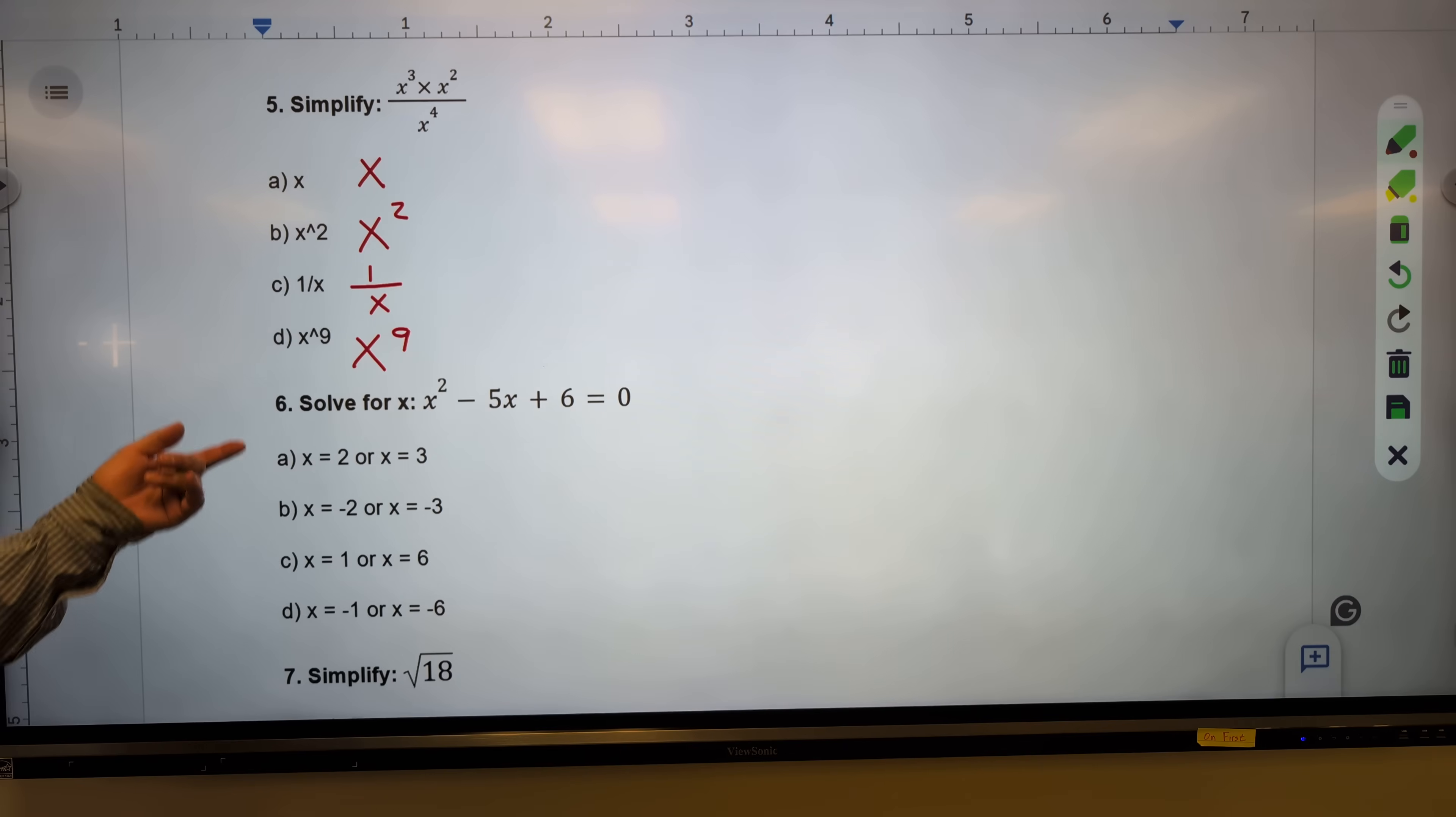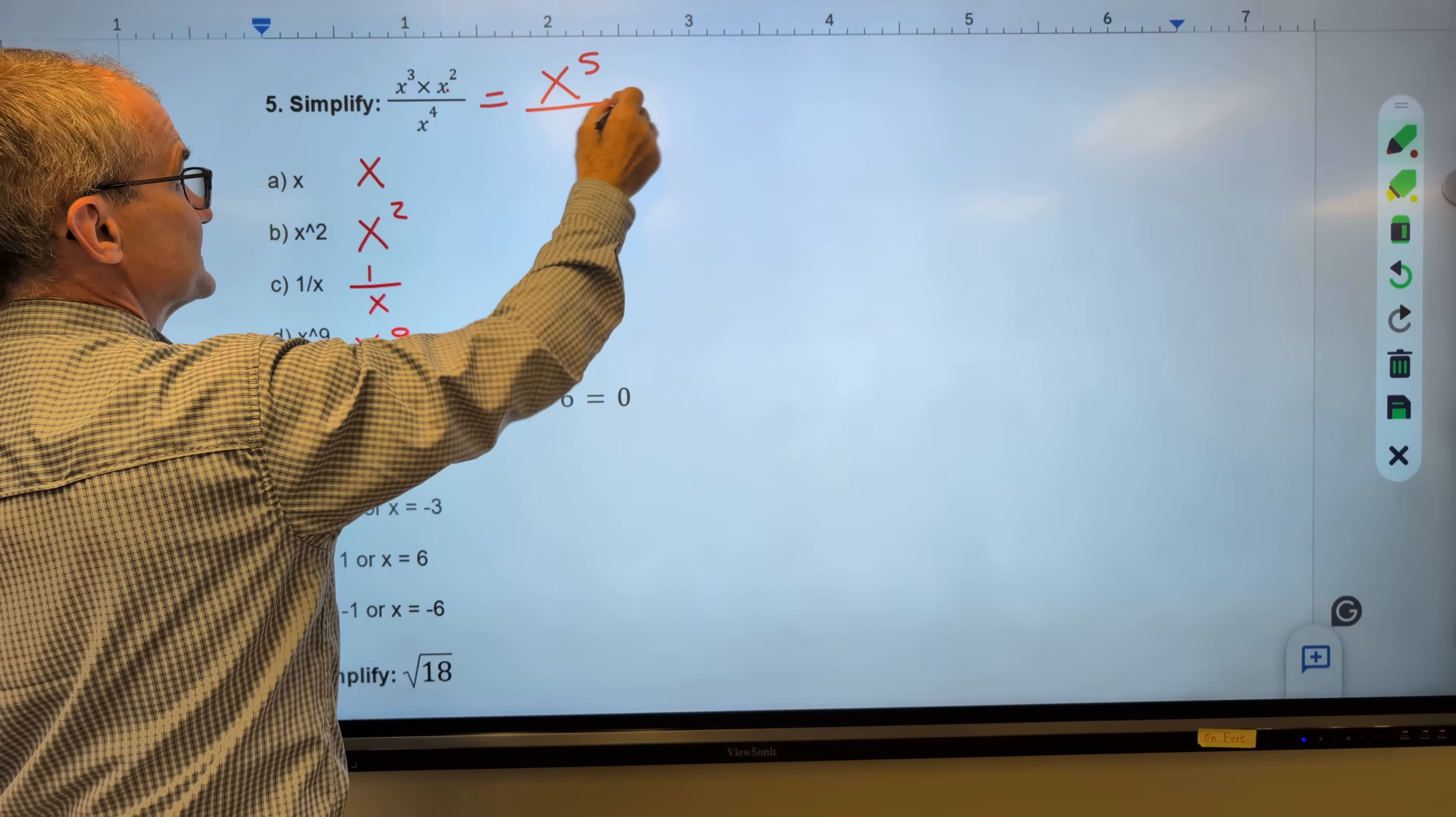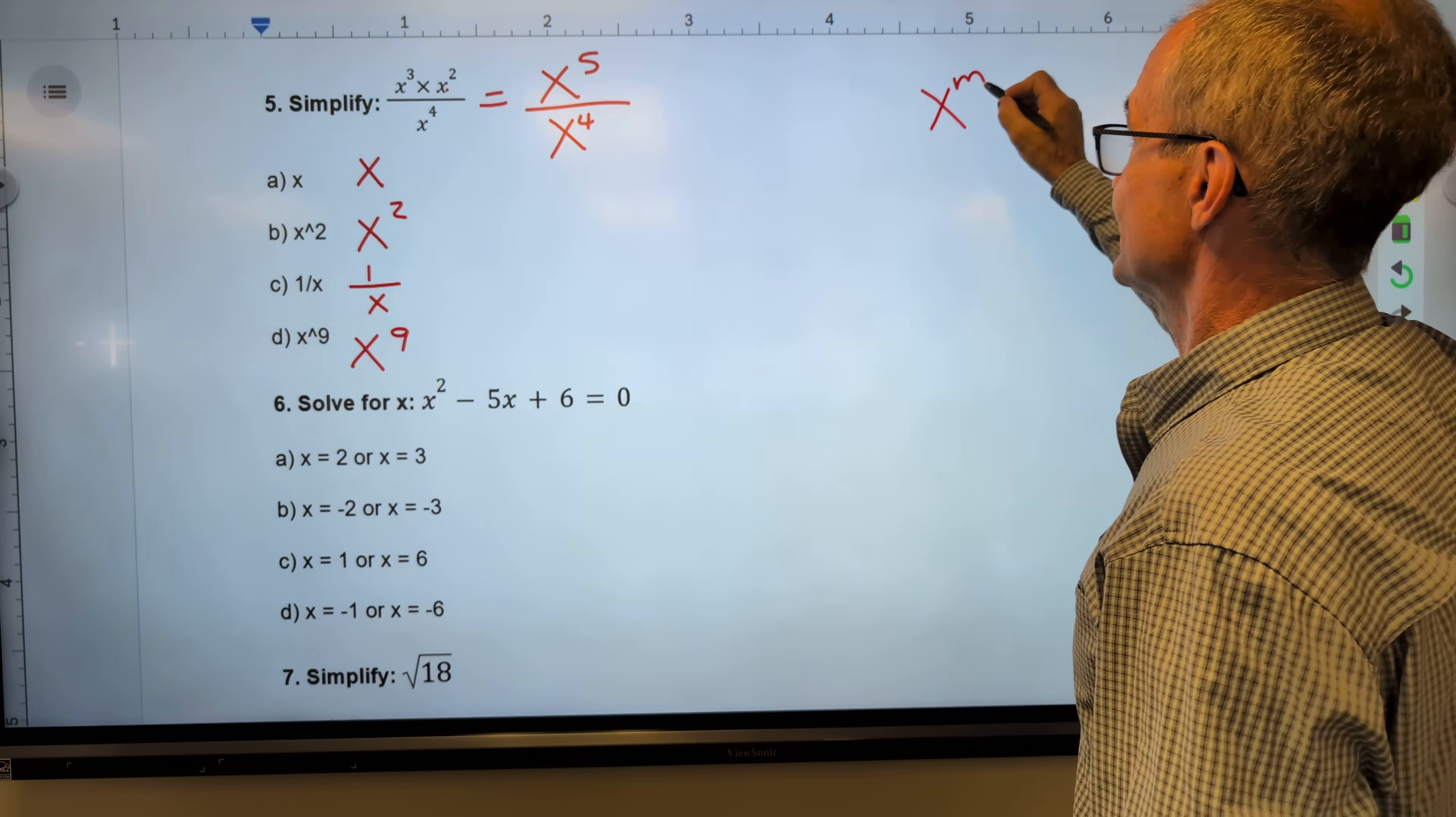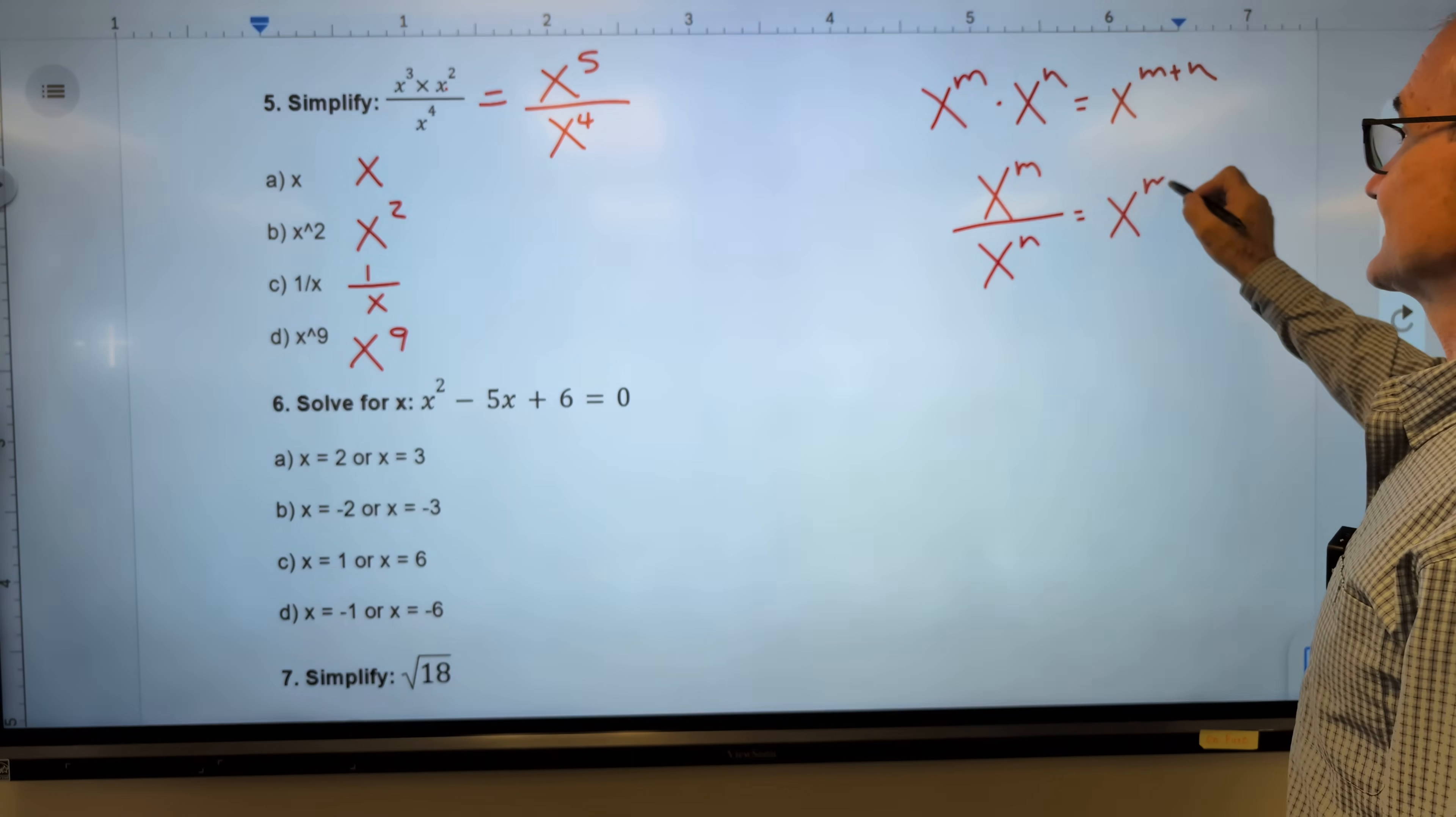The rules of exponents are, if I am multiplying two together, I add the exponents. So in the numerator here, x to the third times x squared, the bases, x's, are the same. Then I add the exponents. You get x to the fifth over x to the fourth. The next rule of exponents I need to know is that if the bases are the same and I am dividing, then I subtract my exponents. So the rule is x to the m times x to the n. When I'm multiplying, I add the exponents. When I am dividing, I subtract the exponents.